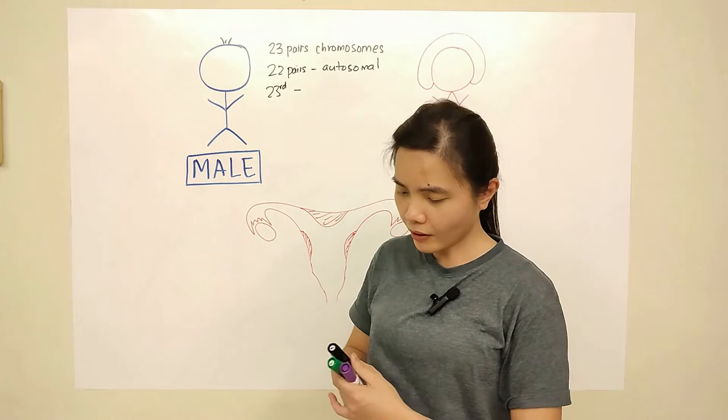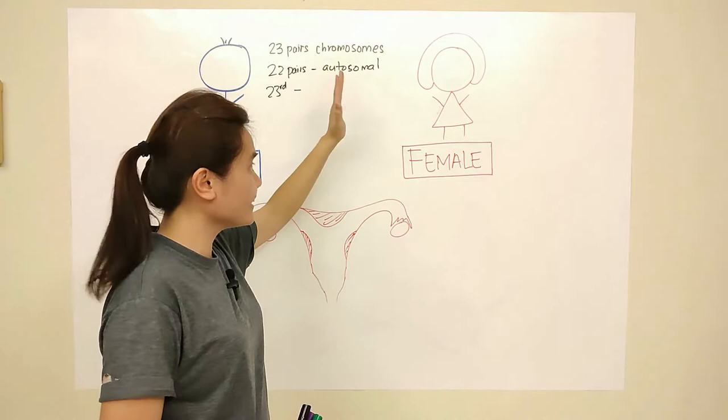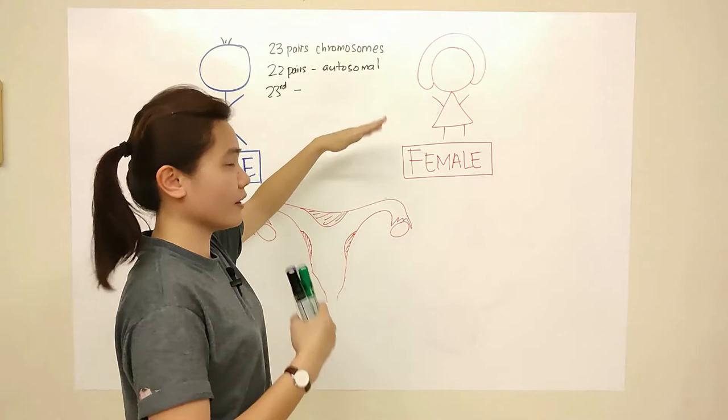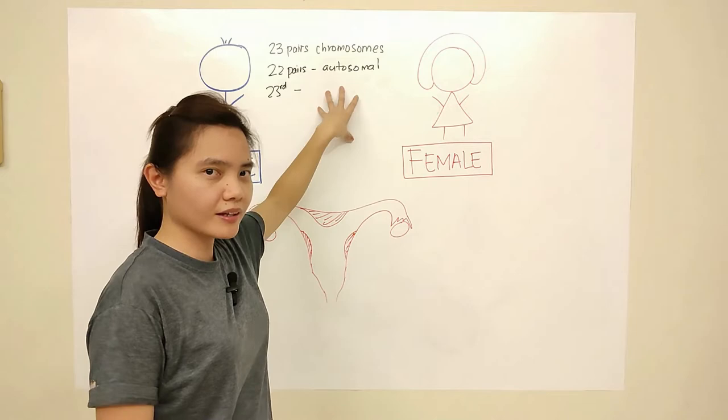So here on this whiteboard I have male and female. We focus on the chromosomes. A chromosome is actually a DNA that can be found inside the nucleus of the cell. We have millions of cells, and in every cell they have a nucleus. Inside the nucleus is the chromosome — that is our profile, our biodata.